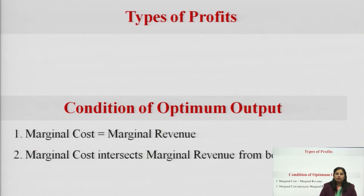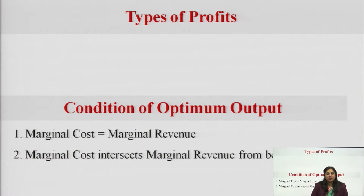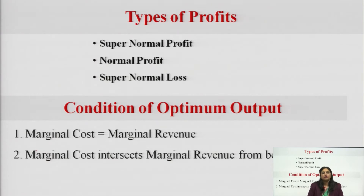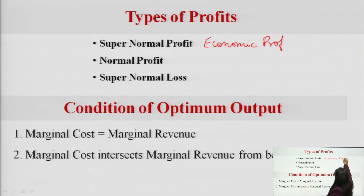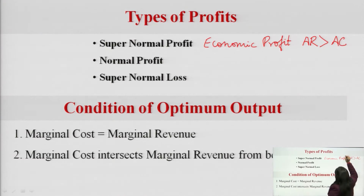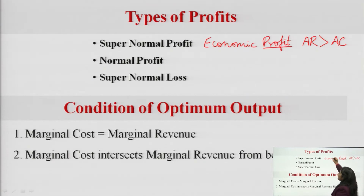Moving to the types of profit — in economics, there are basically three types of profit: super normal profit, normal profit, and super normal losses. Super normal profit is also called economic profit. When is there economic profit? Economic profit is when average revenue is greater than average cost. It means revenue per unit of output is higher than cost per unit of output. That is why there is profit — in real sense there are profits, which is why this is called super normal profit or economic profit.